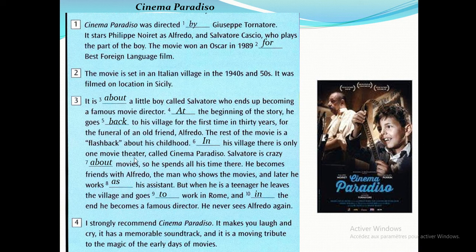'There is only one movie theater called Cinema Paradiso. Salvatore is crazy about movies, so he spends all his time there. He becomes friends with Alfredo, the man who shows the movies, and later works as his assistant. But when he is a teenager, he leaves the village and goes to work in Rome. In the end, he becomes a famous director and never sees Alfredo again.'